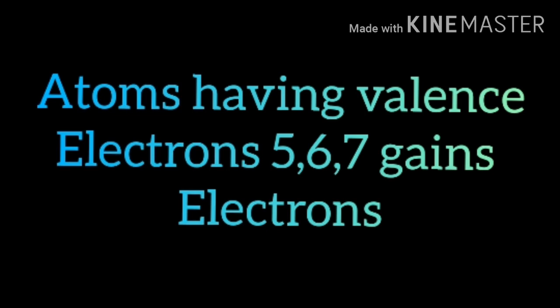In the same way, atoms having 5, 6, or 7 electrons in the outermost shell tend to gain electrons. An atom whose outermost shell contains 5 electrons needs to gain 3 more electrons to attain the stable electronic configuration — 5 plus 3 equals 8. Thus bonds are formed between two atoms either by losing or gaining electrons.